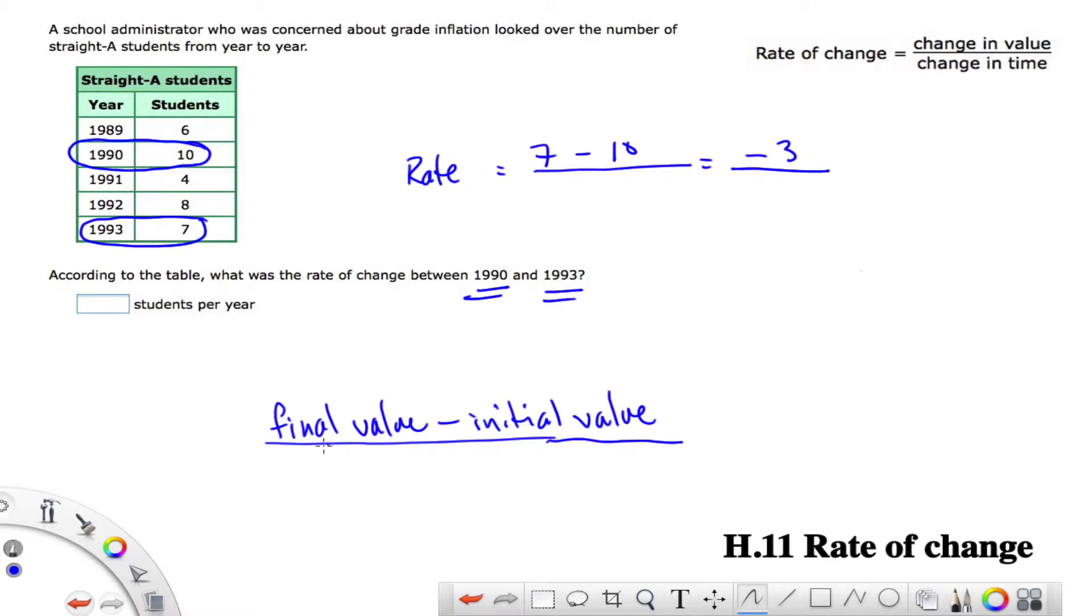We do the same thing for the year. So in this case, we start with the final year minus the initial year. Let's pretend that says year. So our final year was 1993 minus 1990. In this case, it's 3 years.